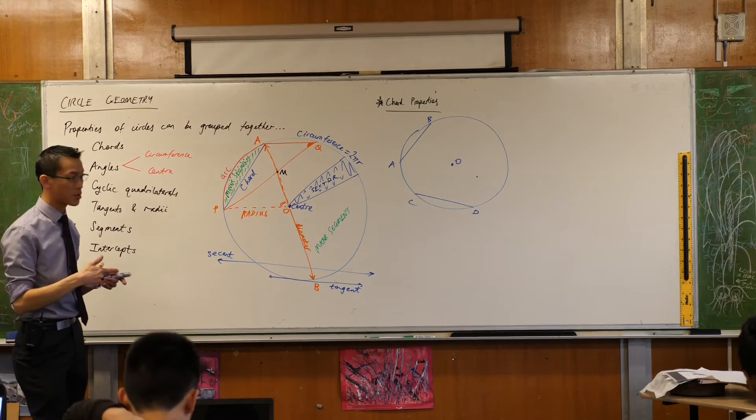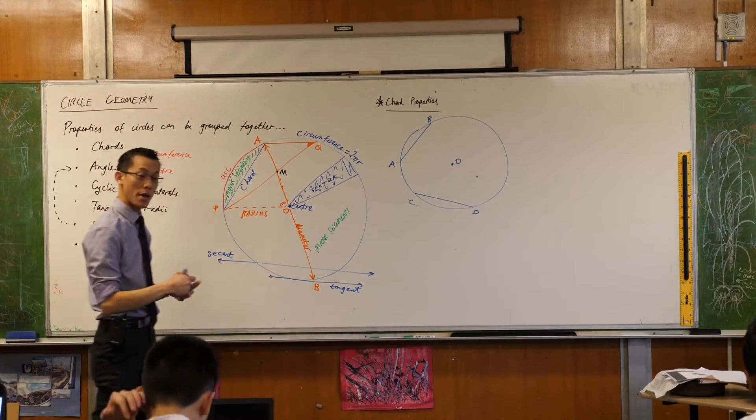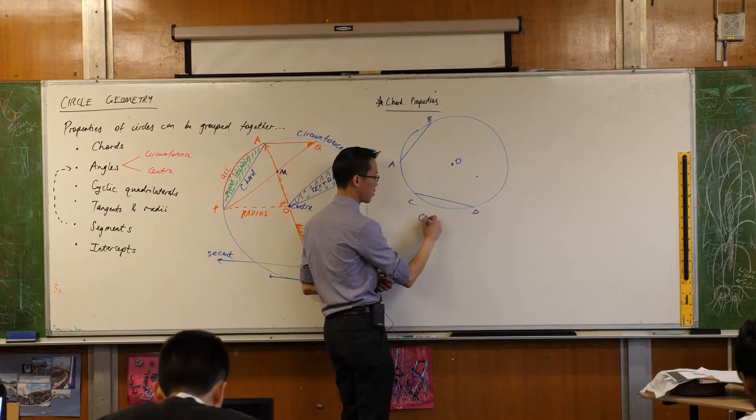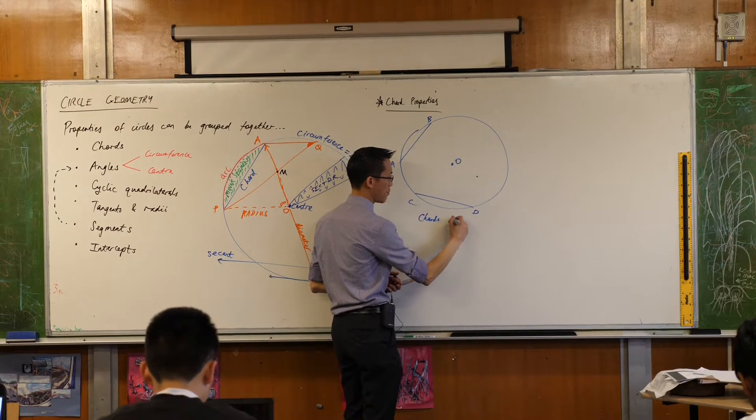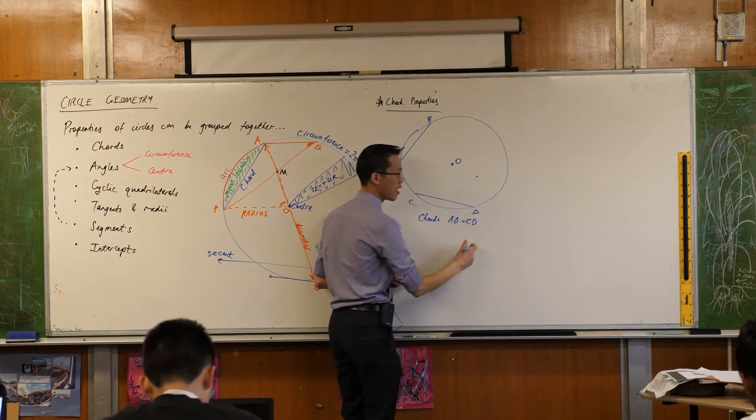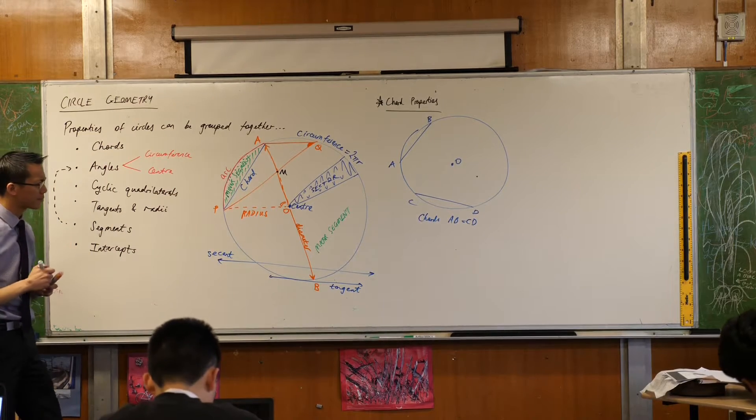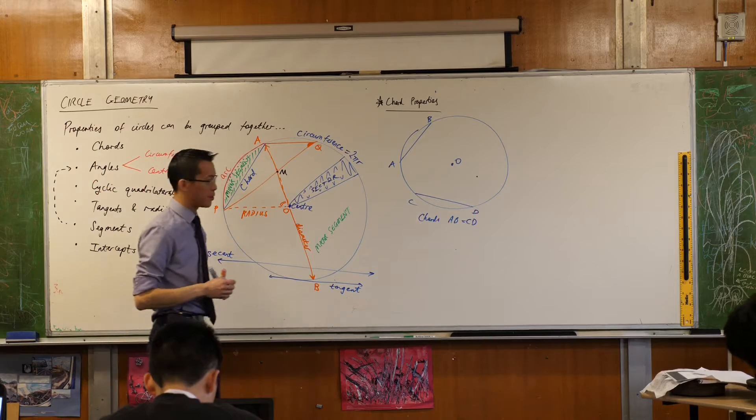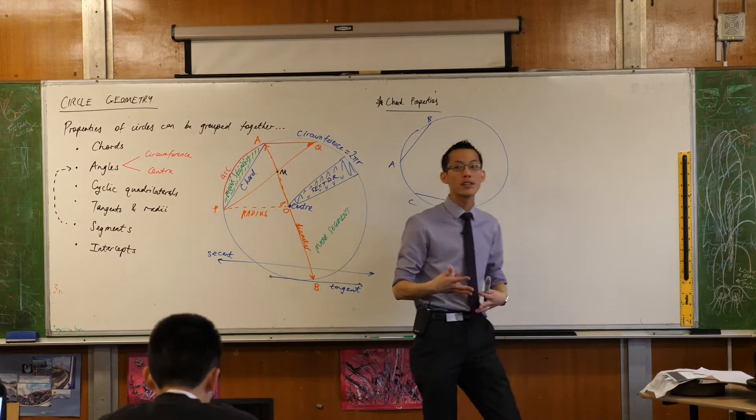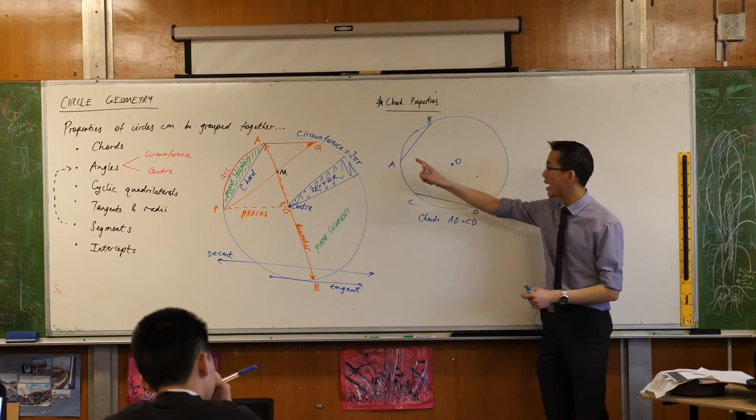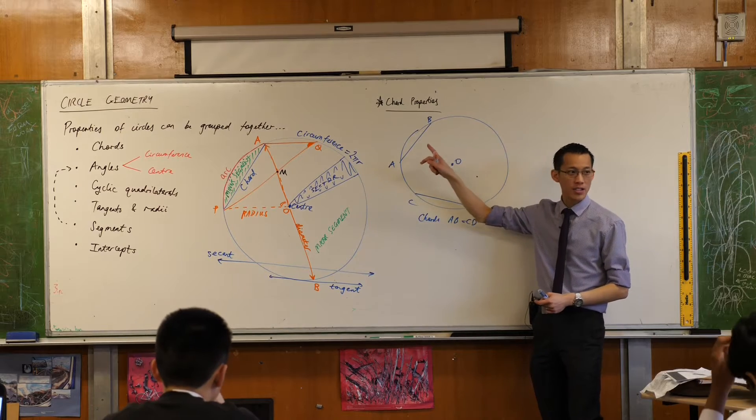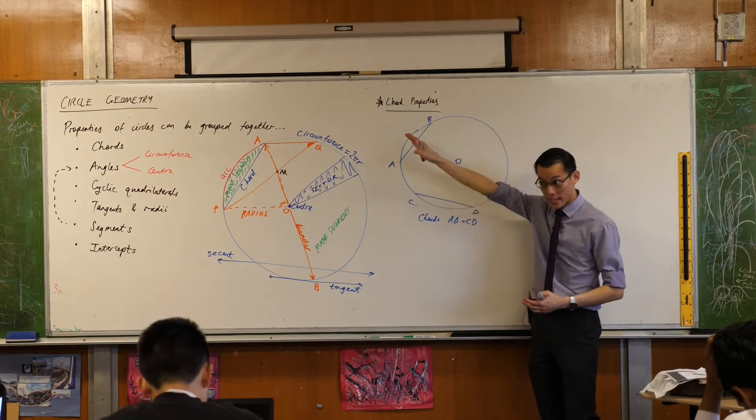So you've got two chords, they're the same length, so maybe underneath this you maybe want to write chords AB and CD are equal. We'll label them as equal in a second. When you join up your chords to your center, I said the shortest length, the shortest length between a point and a line is not just any length, it's the perpendicular.